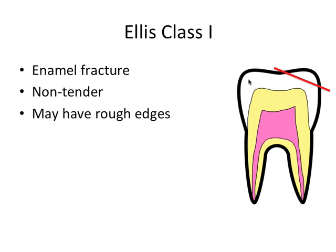Ellis class 1 refers to an enamel fracture, a fracture of tooth structure that only involves the enamel. The tooth is non-tender and it may have rough edges depending on how the fracture travels through the tooth. Treatment involves smoothing any rough edges and restoring lost tooth structure, and if the patient or their parent has the tooth fragment available, you can just bond that back onto the tooth.